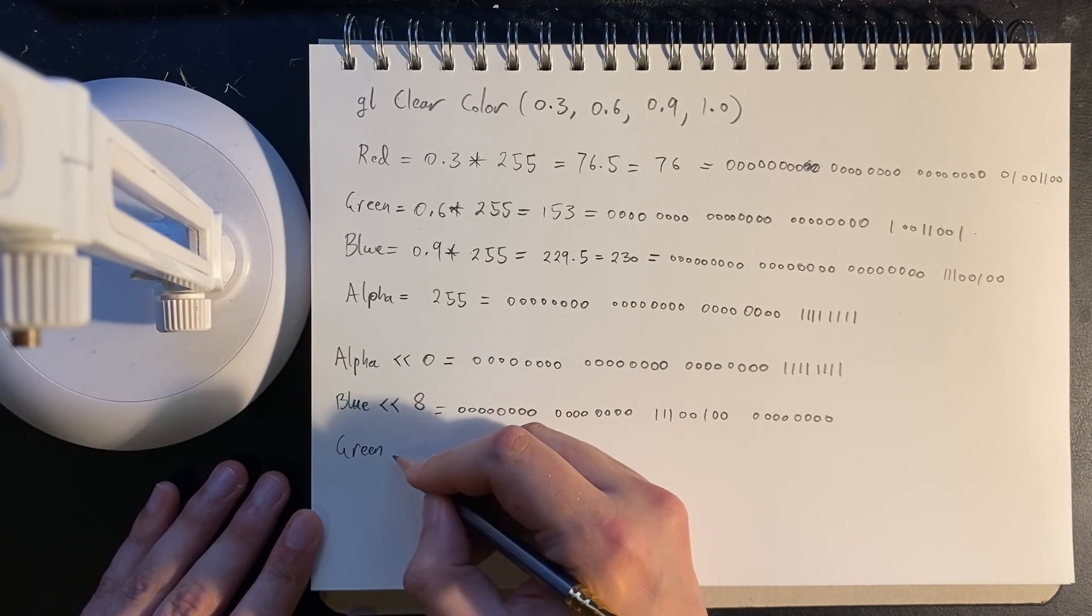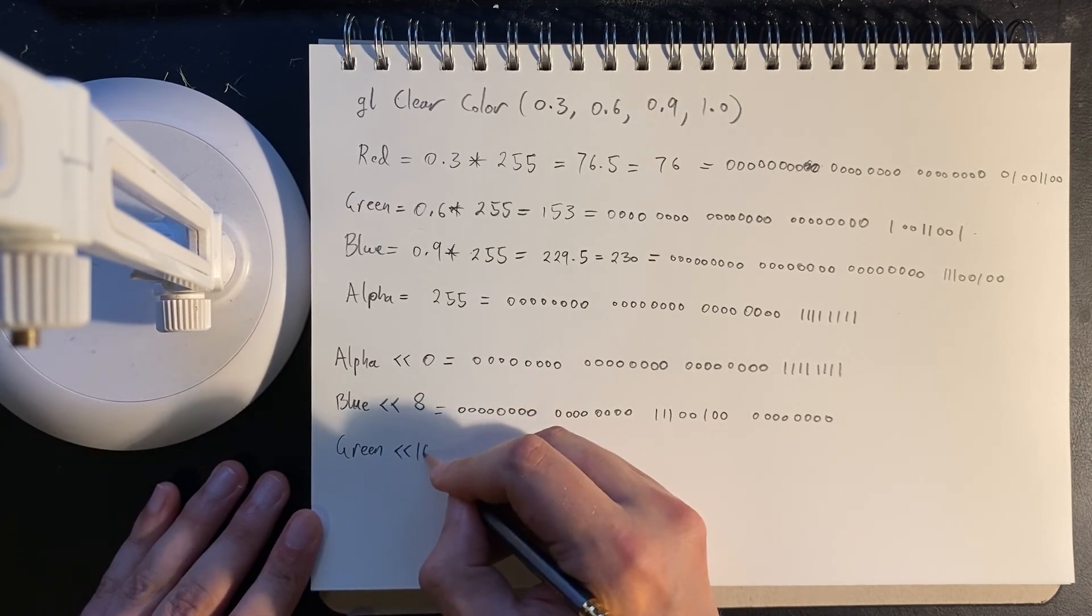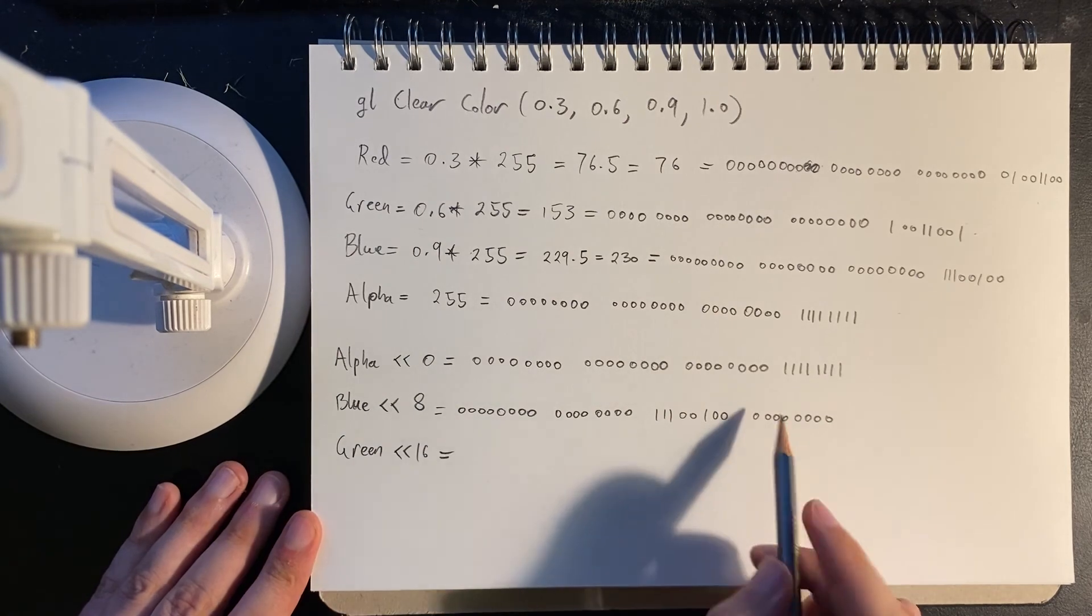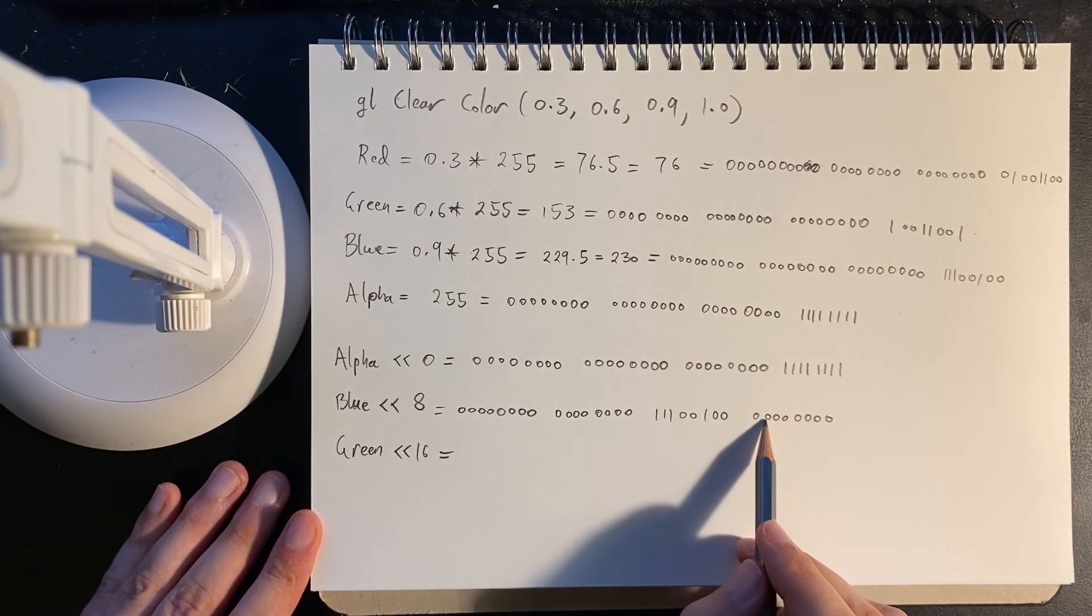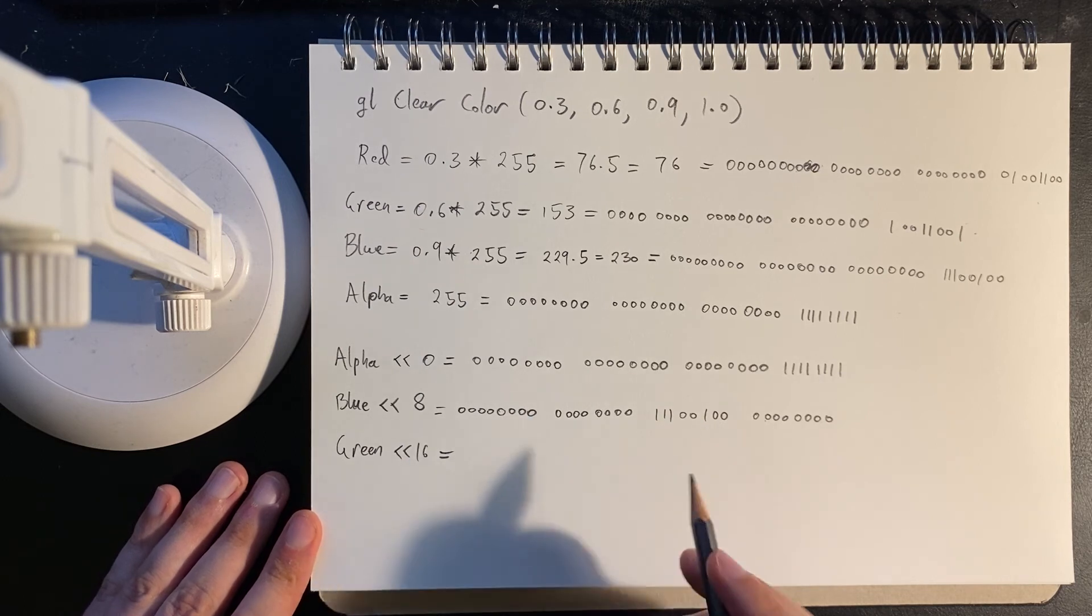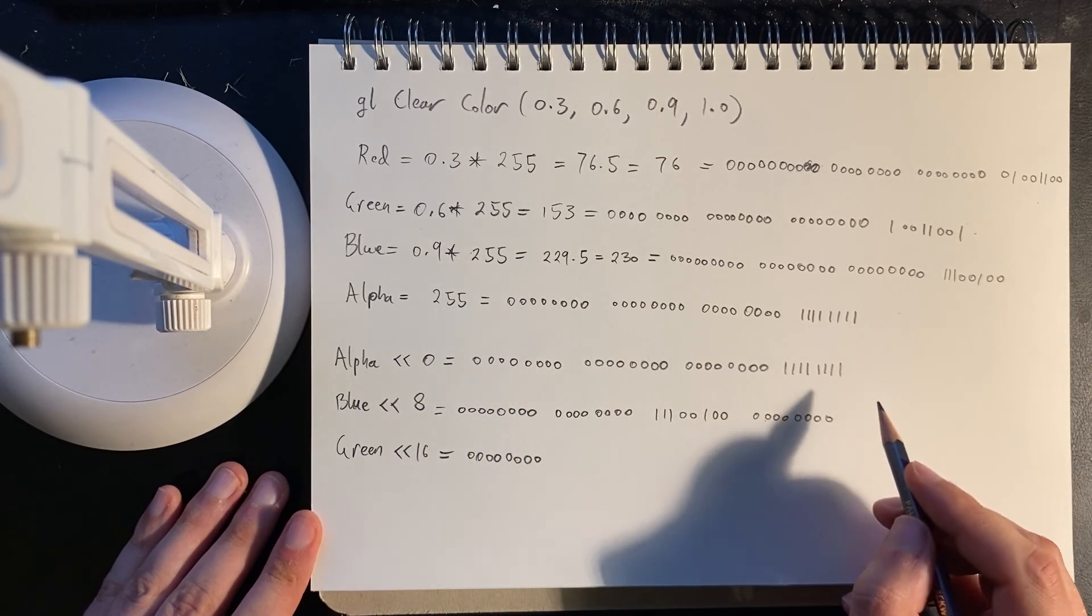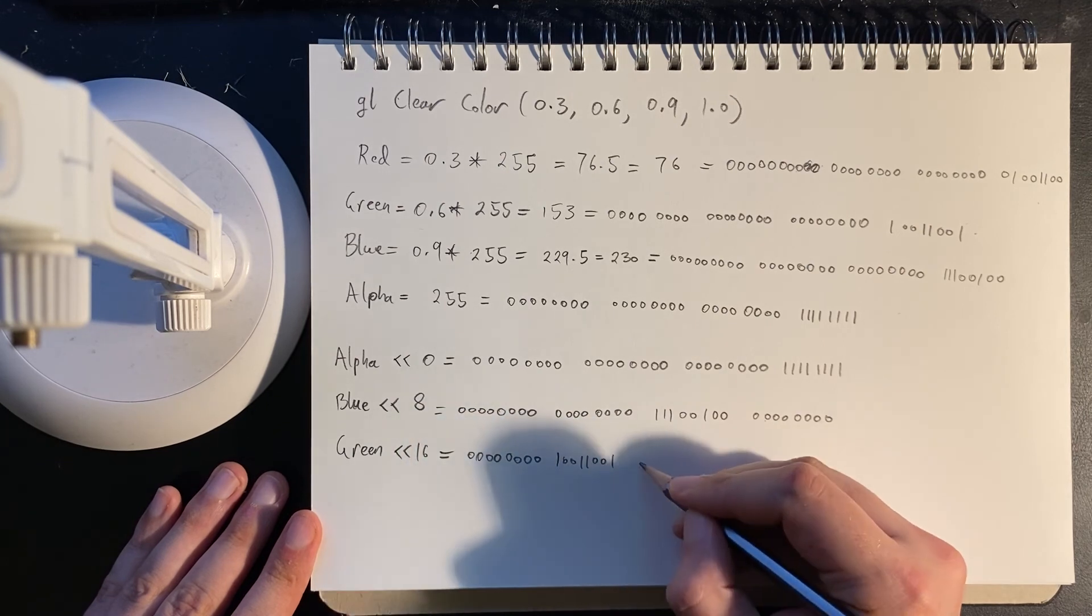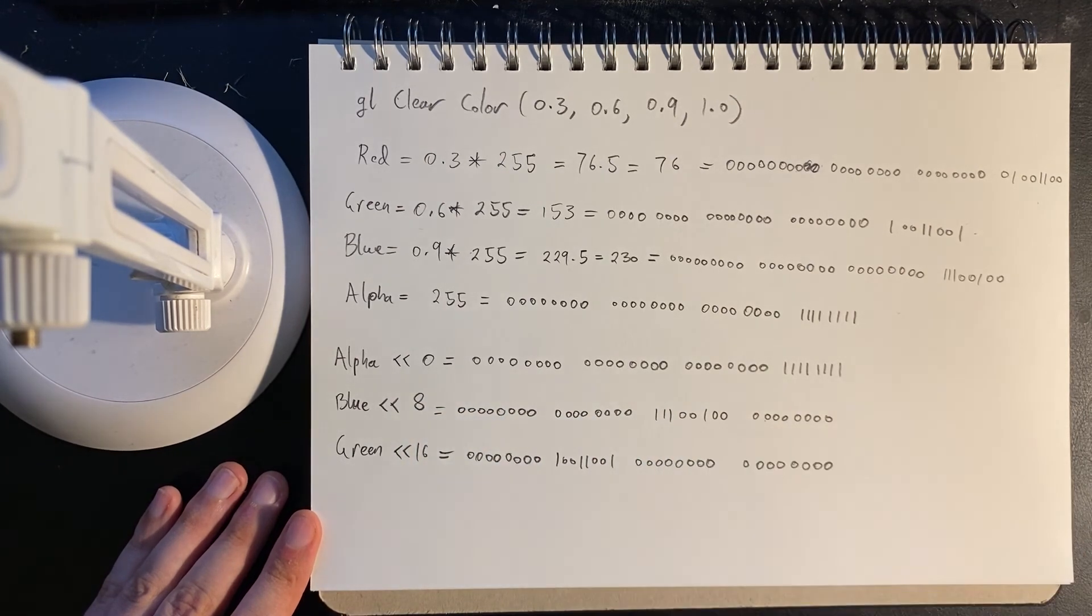Then we'll take the green. And we'll shift it up by 16 bits, because these lower eight bits are alpha. These next eight bits are blue. And so shift it up by 16.